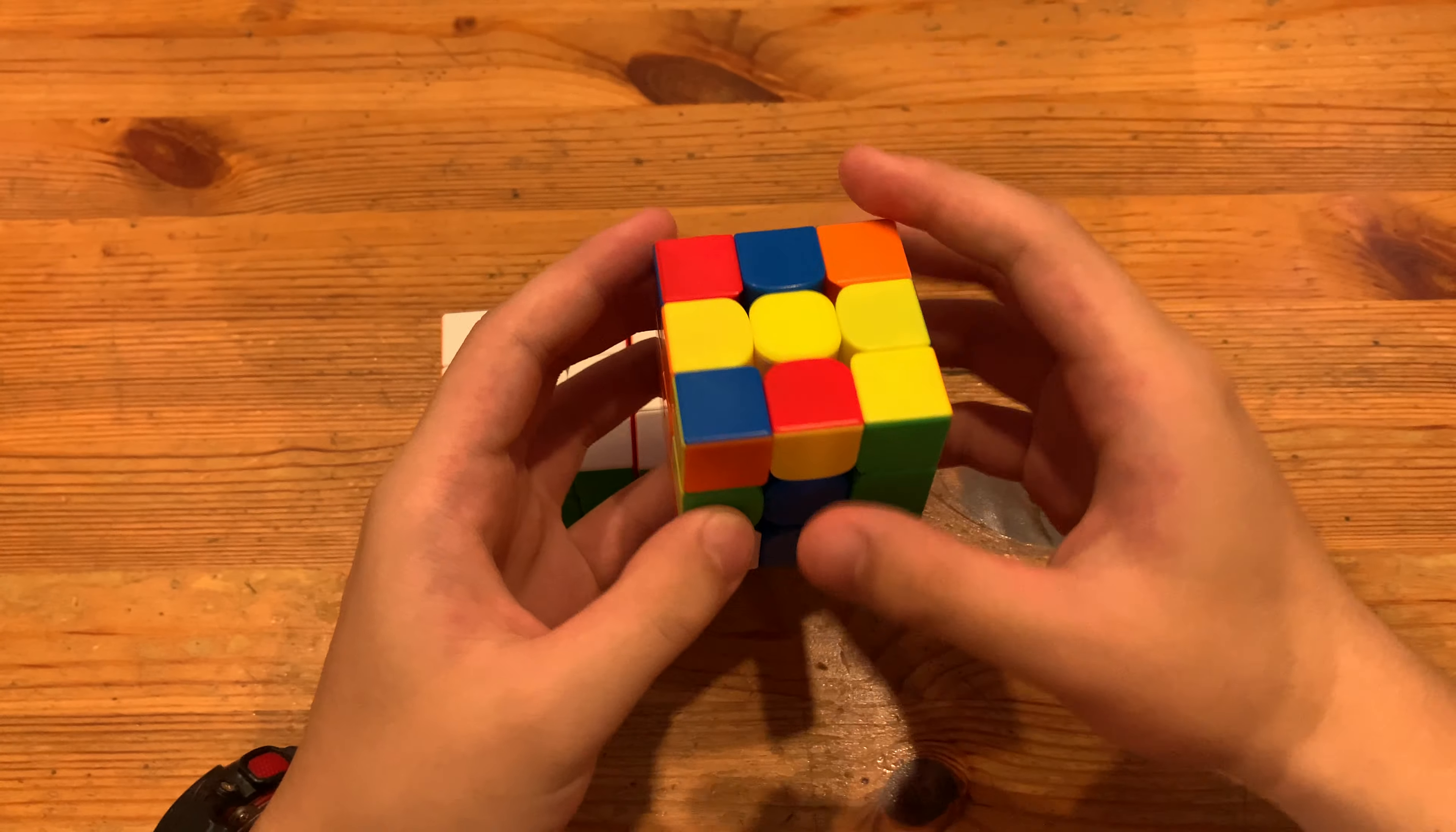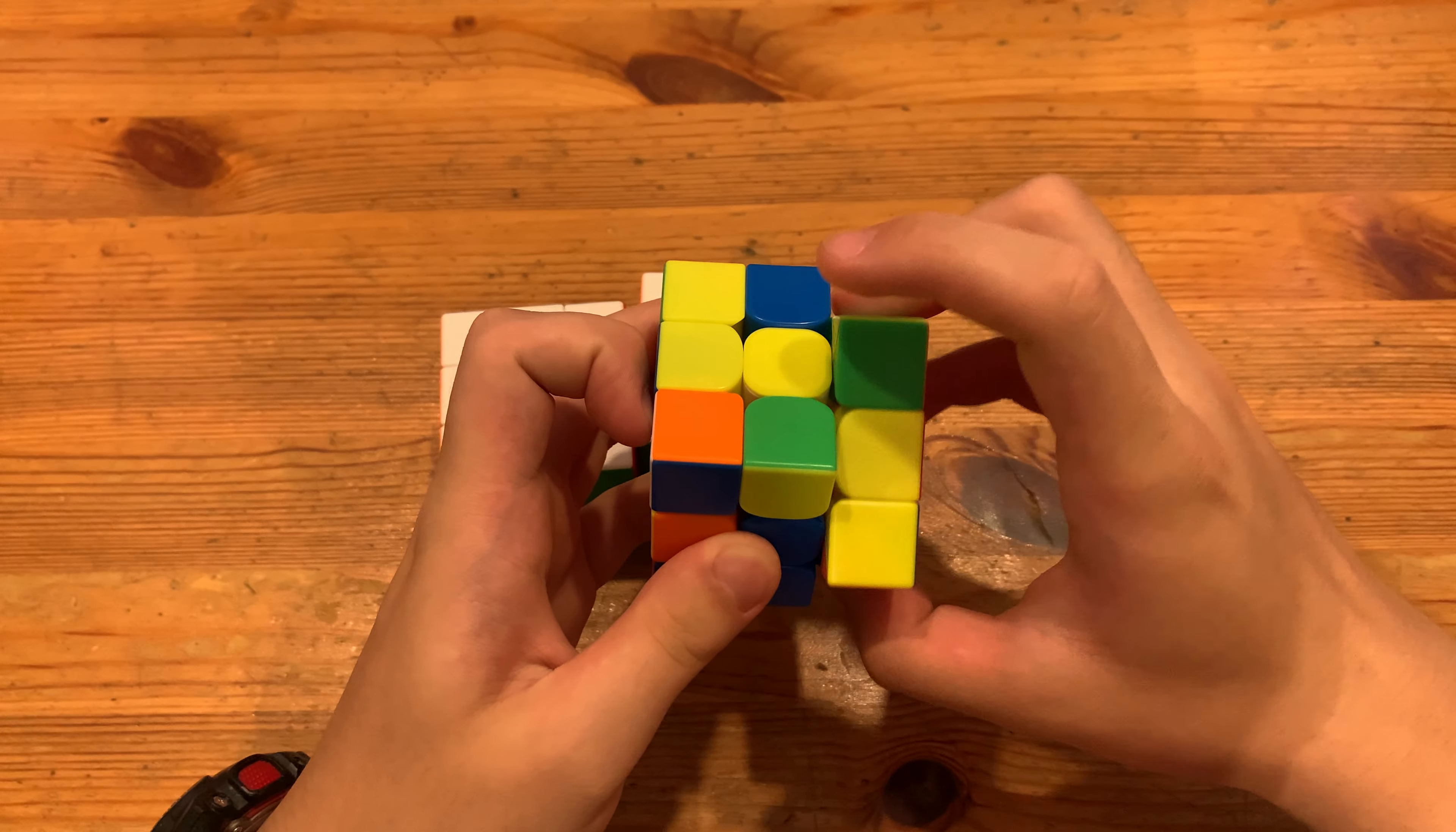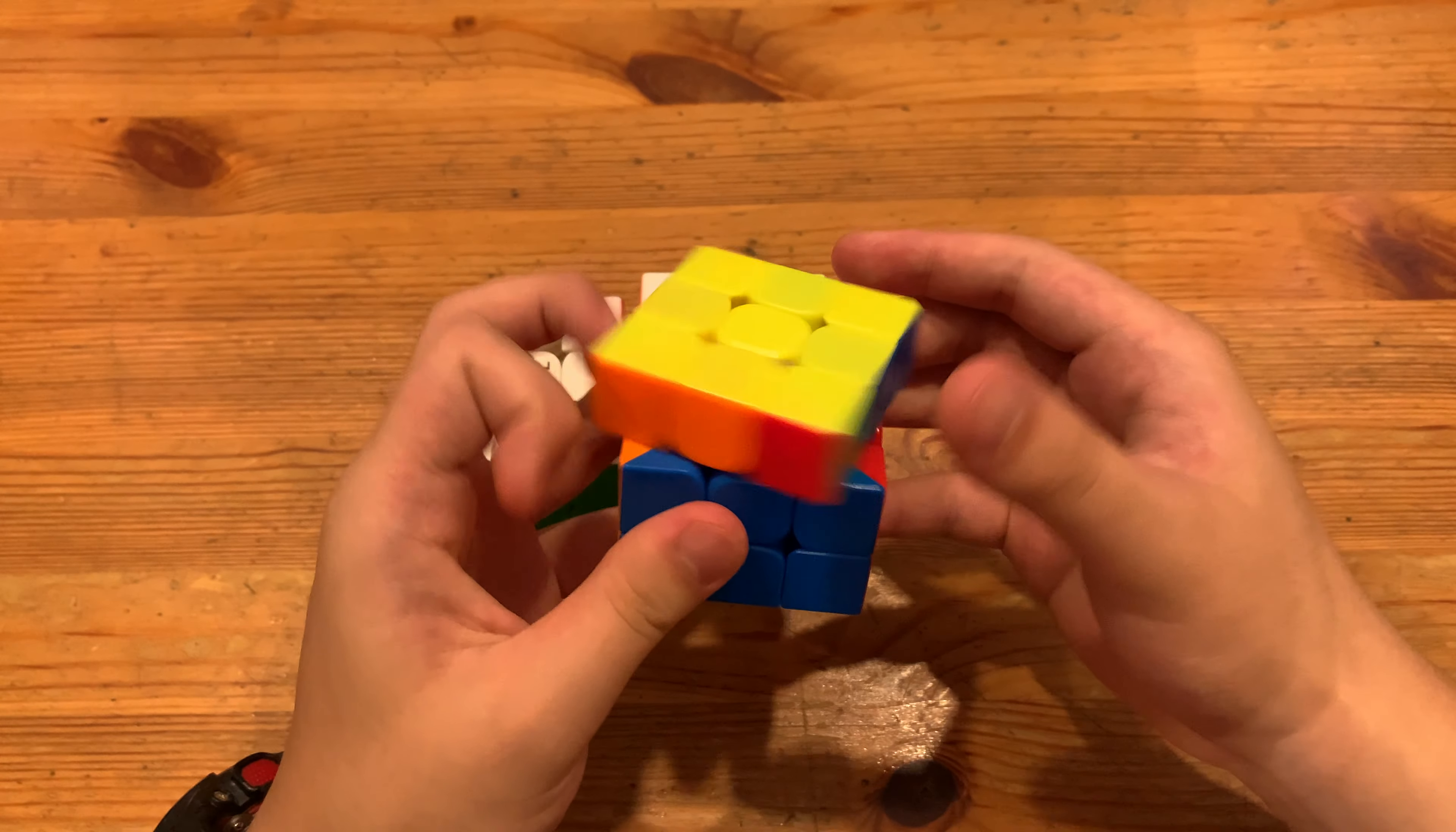And then here, I'll just solve this F2L here. And then go right into solving this pair with the six mover, which also pairs up this pair. So I can go right into it. Now I just have OLAL. And from this angle, I will just AUF to this ALG. And then PLR.